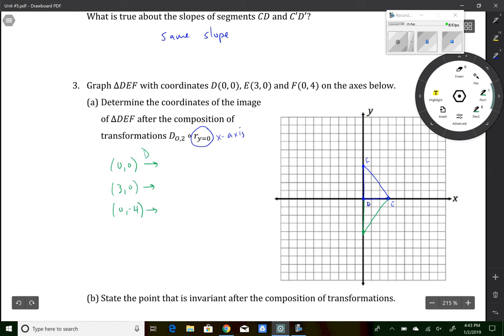If I dilate them, I'm going to multiply them all by 2. Well, 0 times anything is 0. So that point stays exactly the same. 3, 0 becomes a point 6, 0. And 0, negative 4 becomes 0, negative 8. So this final image is going to look something like this.